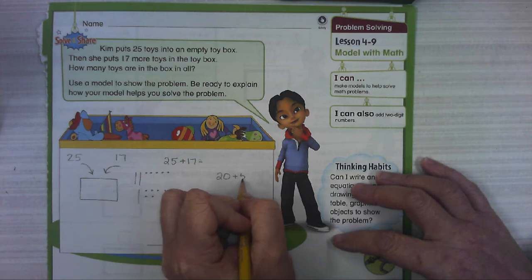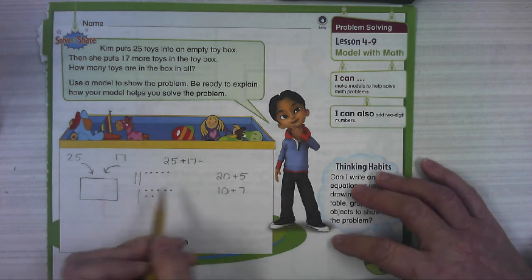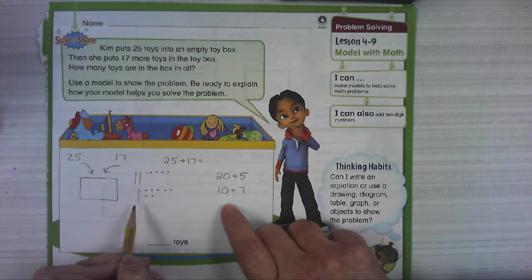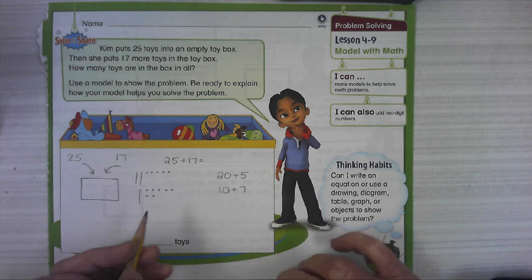25 is 20 plus 5. 17 is 10 plus 7. These numbers match our models. This is 20 and this is 5. Over here we have 10 and 7 ones. So this is really the same, it's just shown differently.